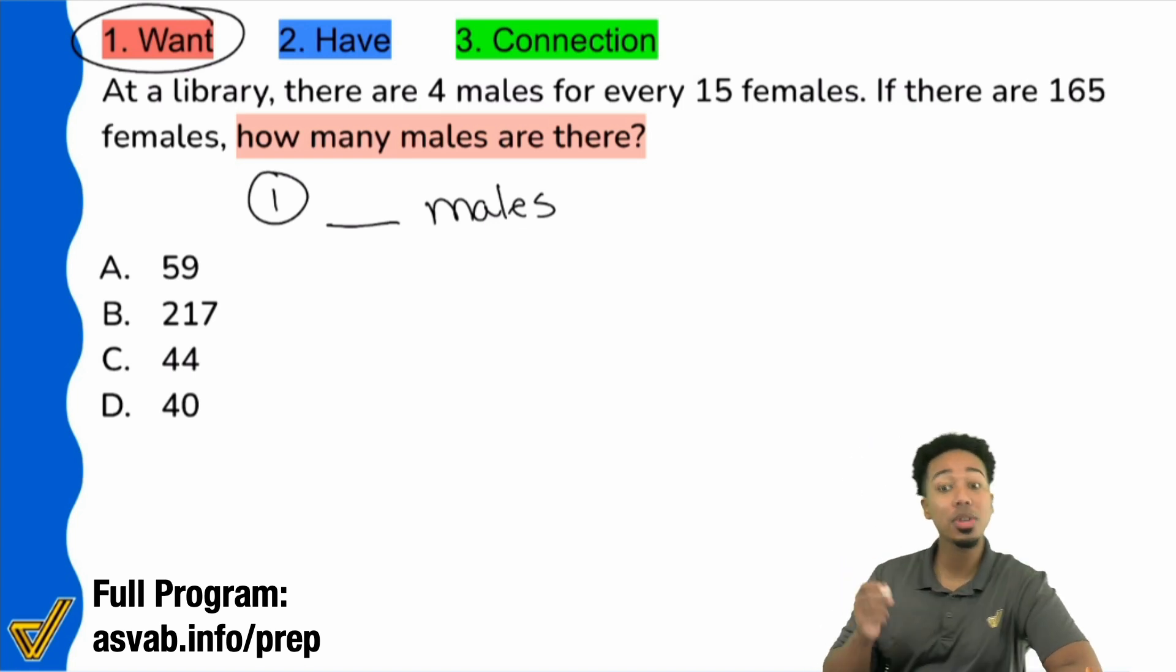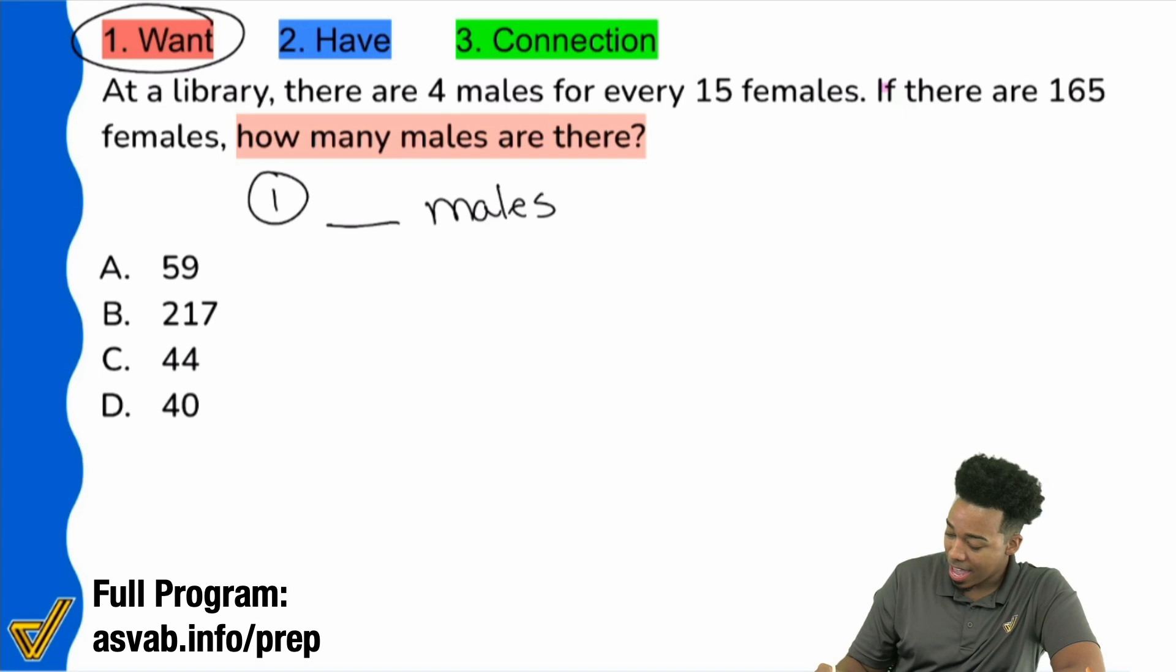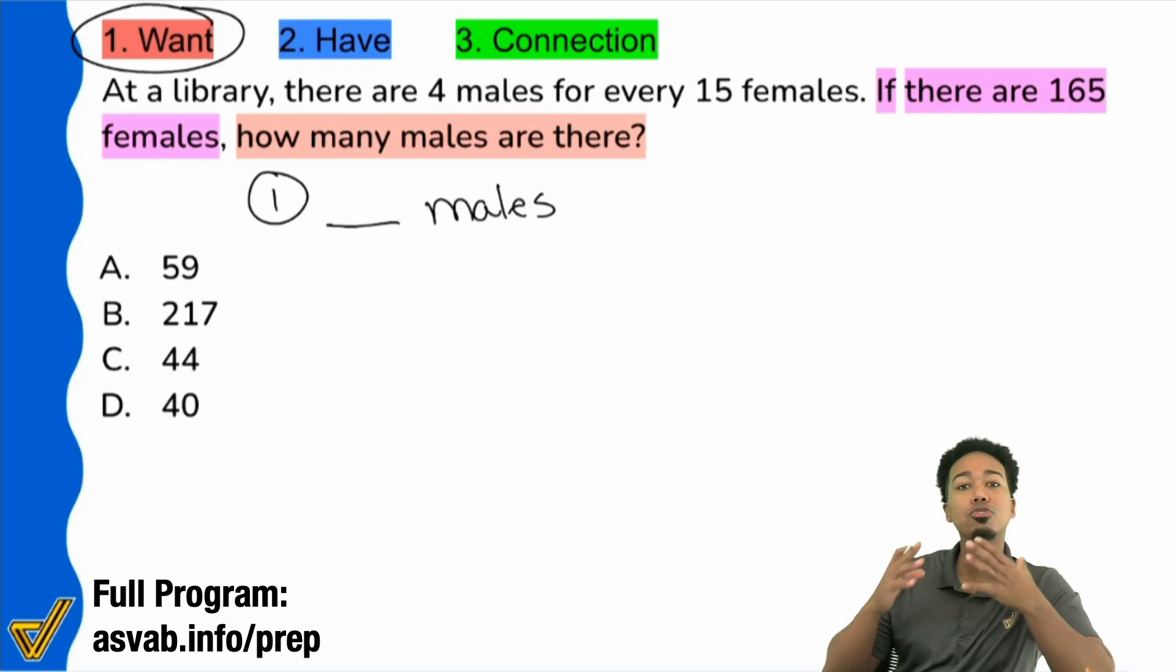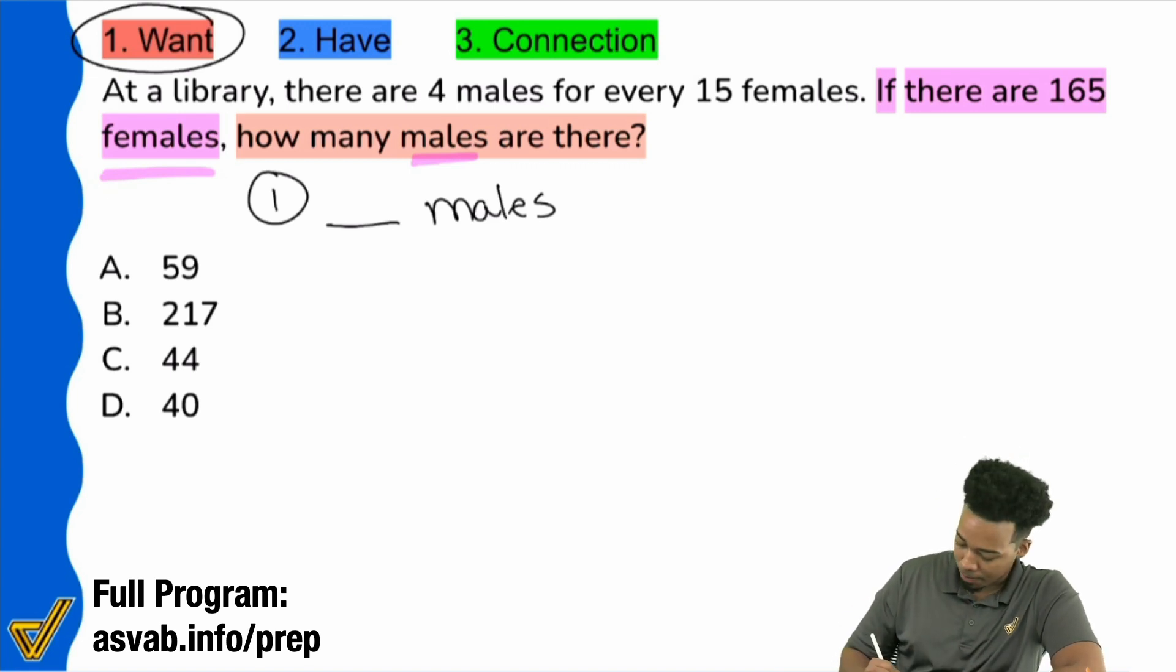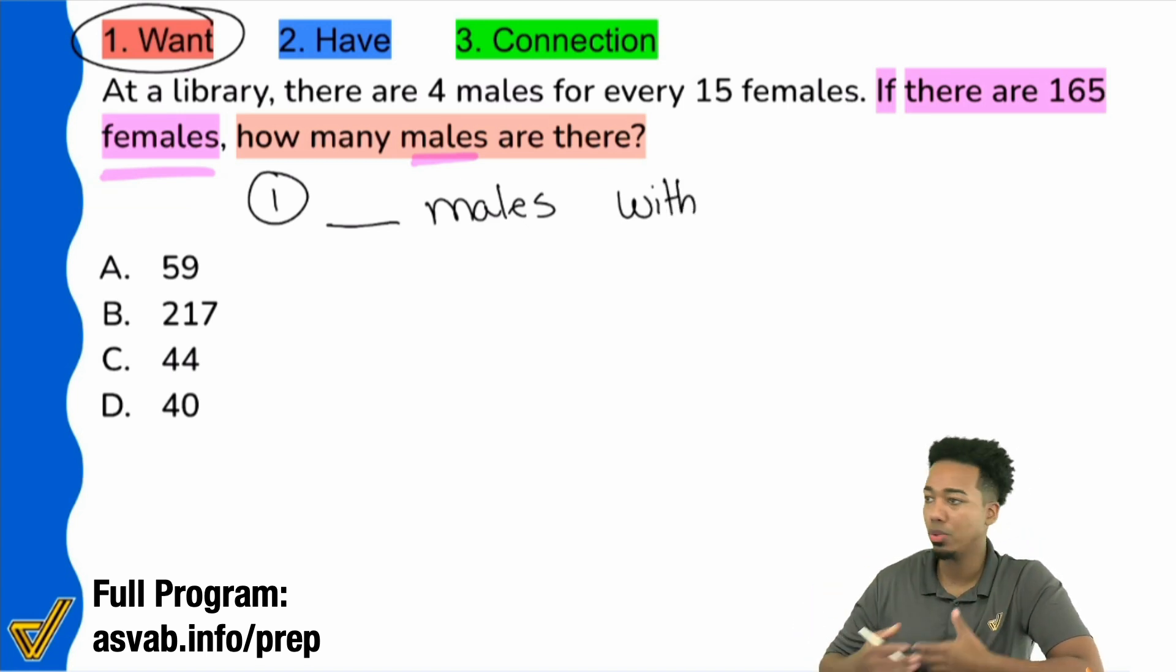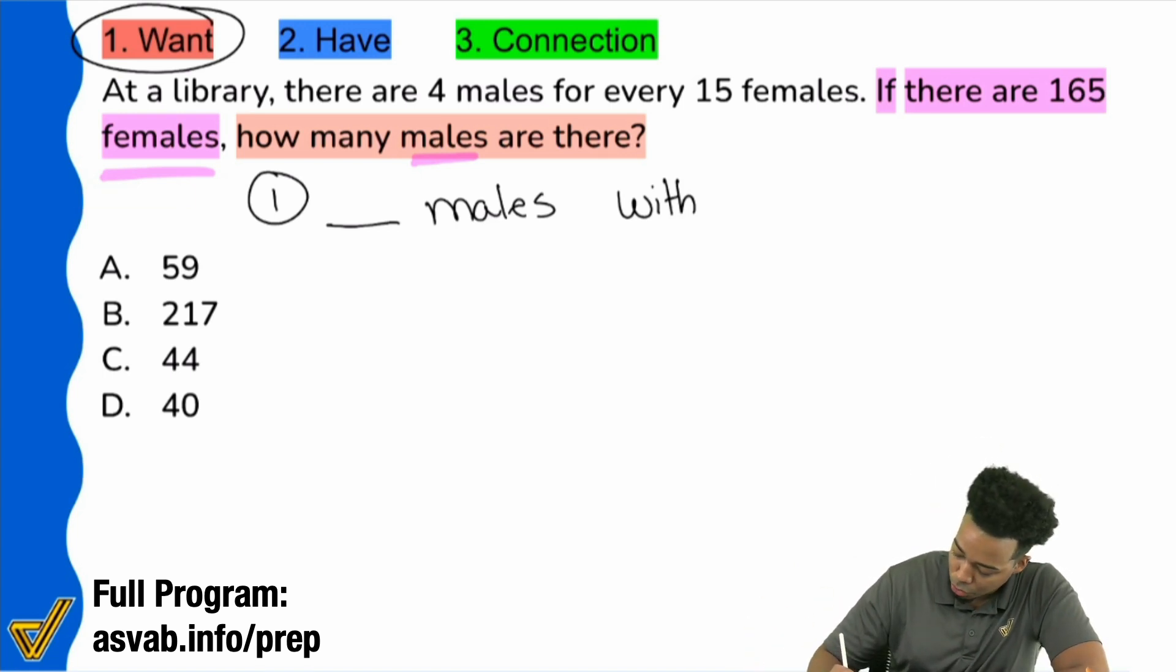So notice how in this question sentence, you're told, hey, if right here, there are 165 females. So again, they are basically screaming at you that there's a connection, a relationship between females and males in this particular question. So booyah. So we say blank males with or correlating to or related to 165 females. Just make sure you establish some sort of connection. It doesn't matter how you do it.